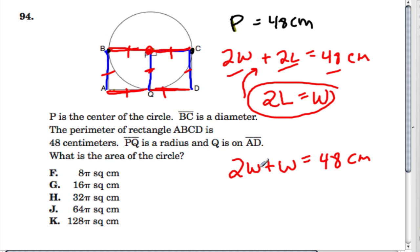If we have two W's and another W, we have three W's equal to 48 centimeters. And we divide by three. 48 divided by three is 16.